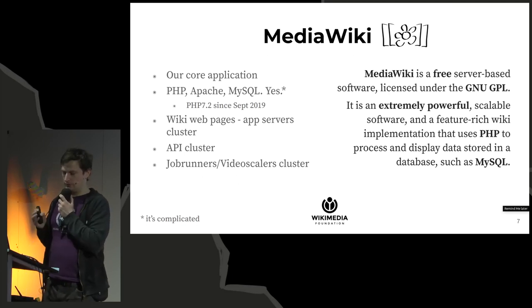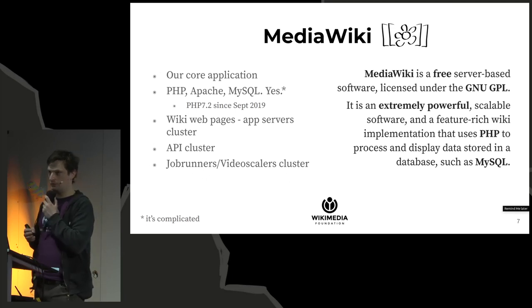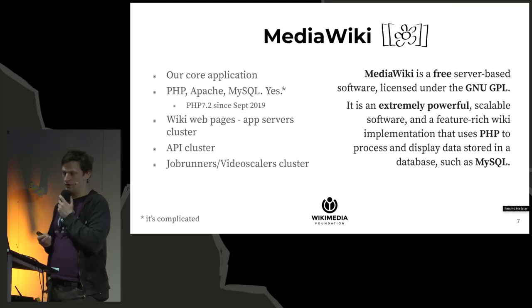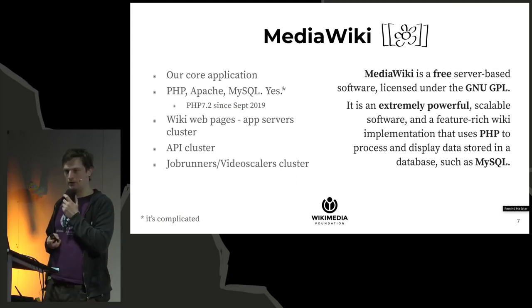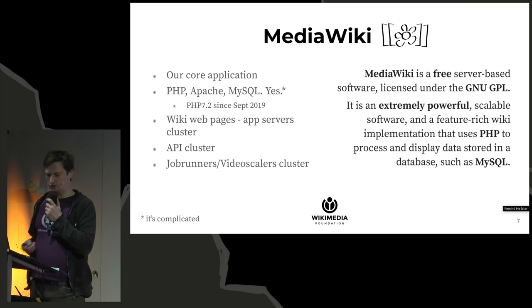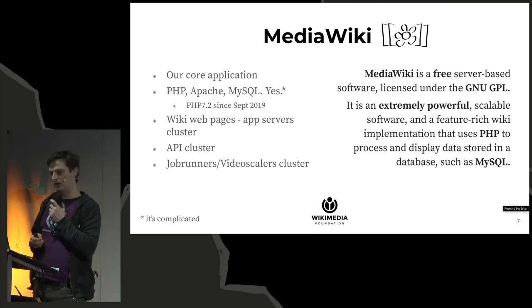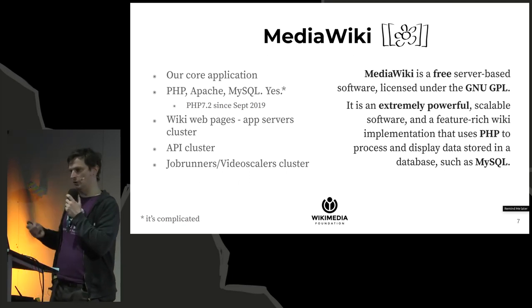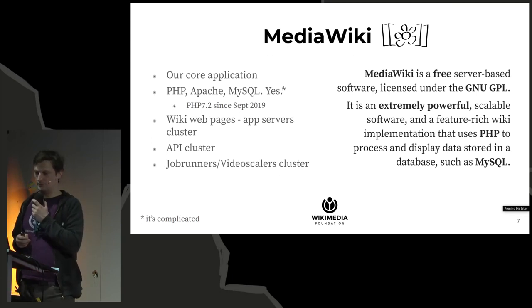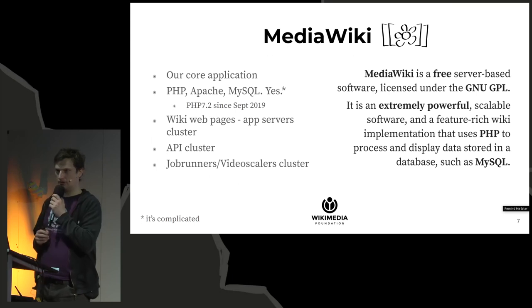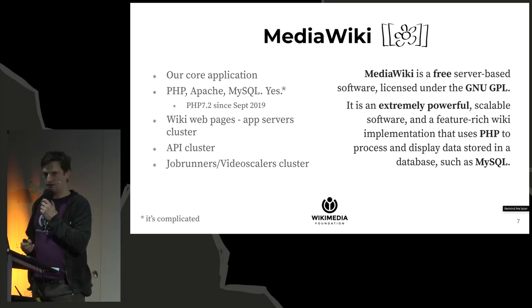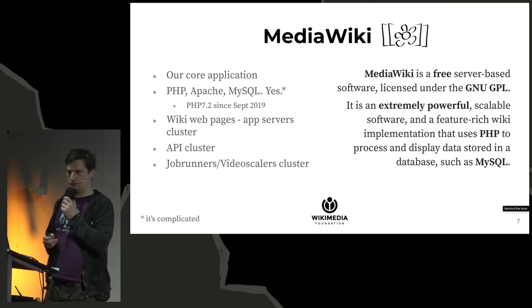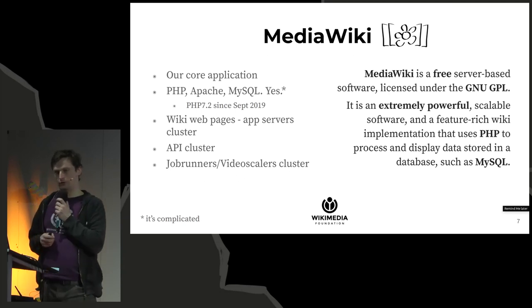We have separate server clusters for different request types: page views and edits on one hand, API calls on another. We also have servers for asynchronous background jobs — the job runners — where video scaling is an obvious example, since it takes too long to do on the fly. MediaWiki is amazing in that you can install it on a $10/month shared host and it runs, but you can also use it to serve half the world.